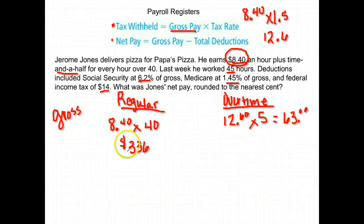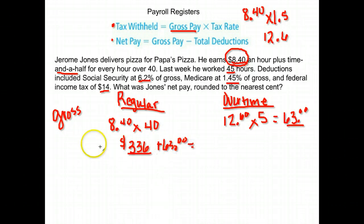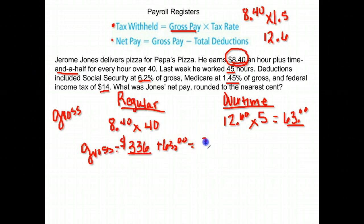His total gross pay is made up of his regular pay and his overtime pay. We take his regular pay of $336 and add $63 more. His gross pay — the amount based on his dollars per hour — was $399.